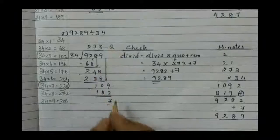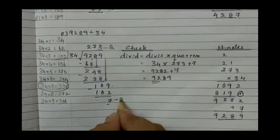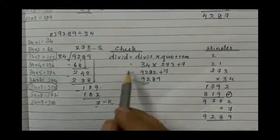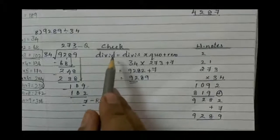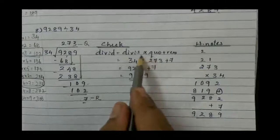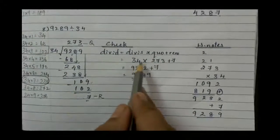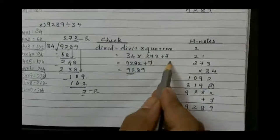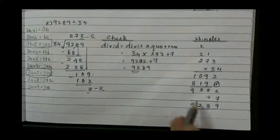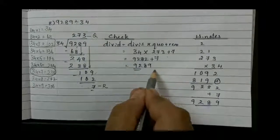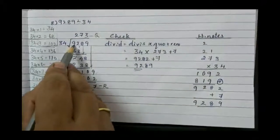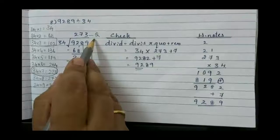What is the quotient? 273 and remainder is 7. Let's check. Write down the formula: Dividend equals divisor into quotient plus remainder. That is 34 into 273 plus 7. Go for the working note, you will get the answer as 9,289, similar to the dividend. That means your quotient is right.